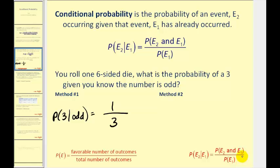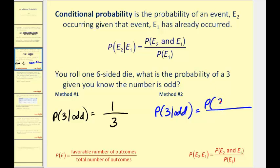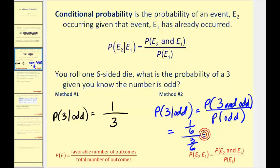Now if we take a look at the conditional probability formula, we should get the same answer. This would be equal to the probability of rolling a three and an odd divided by the probability of rolling an odd. The probability of rolling a three and an odd is one sixth, divided by the probability of rolling an odd, which is three sixths. One sixth divided by three sixths is the same as one sixth times six thirds, and the result is the same: one third.